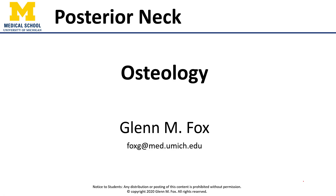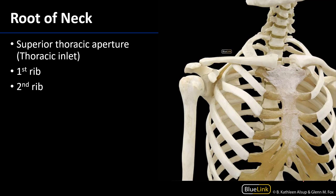Hello everyone, let's talk about the osteology of the posterior neck. Looking at this articulated skeleton from an anterior view, slightly lateral as well, we can tell the orientation from the sternum here. The sternum is colloquially known as the breastbone, and we can see the articulations of all of the ribs coming down to meet the sternum along the midline.